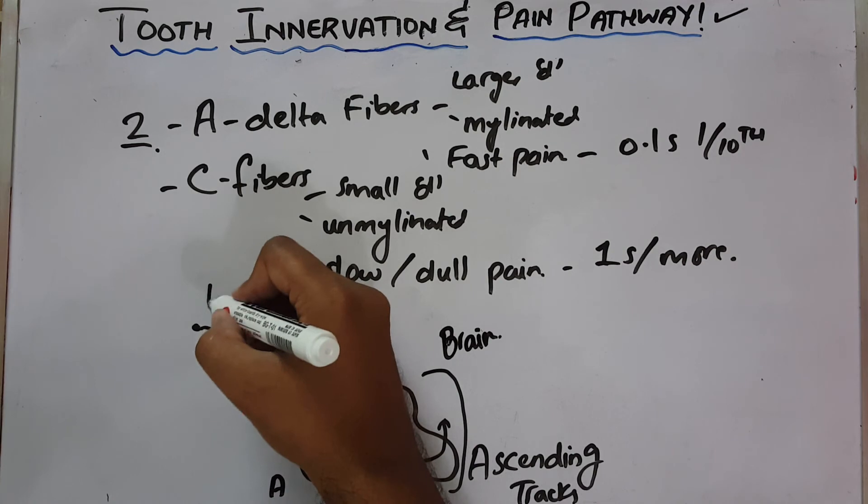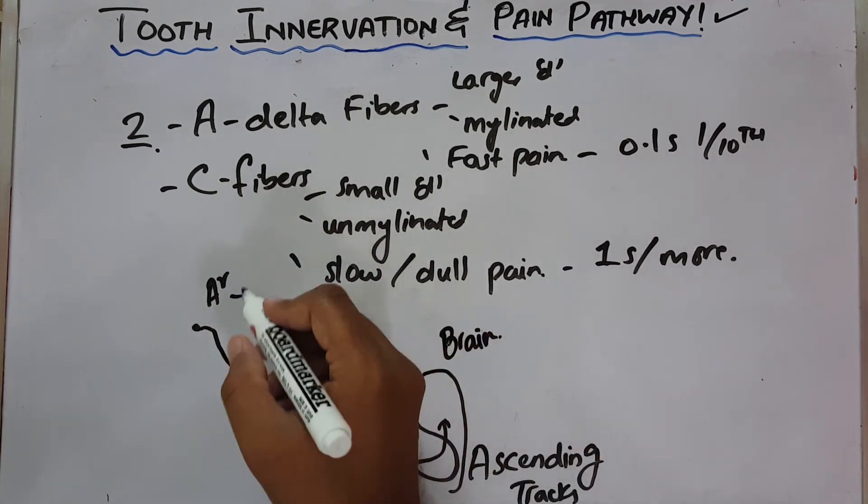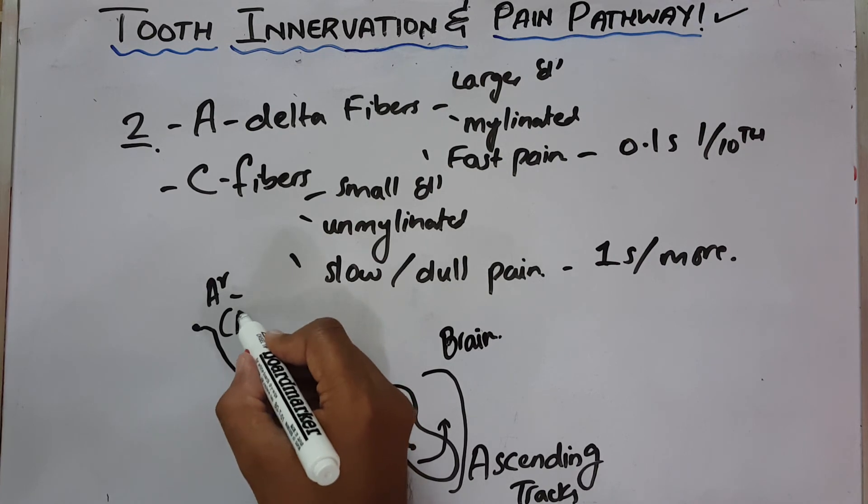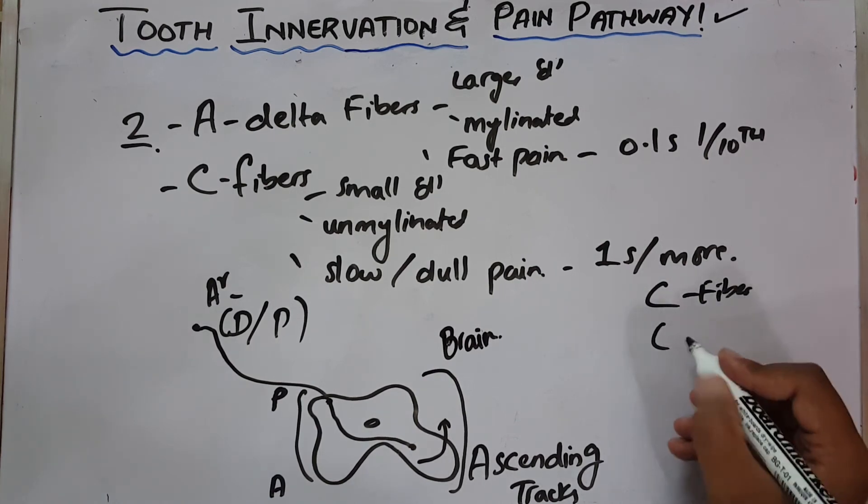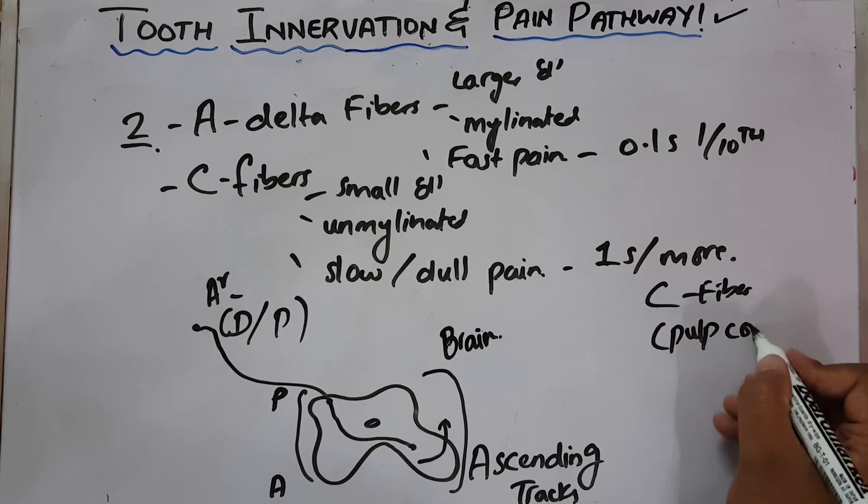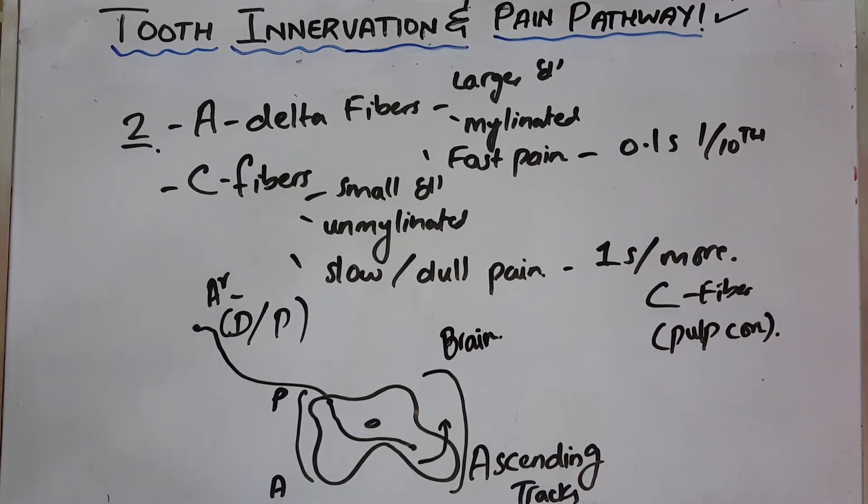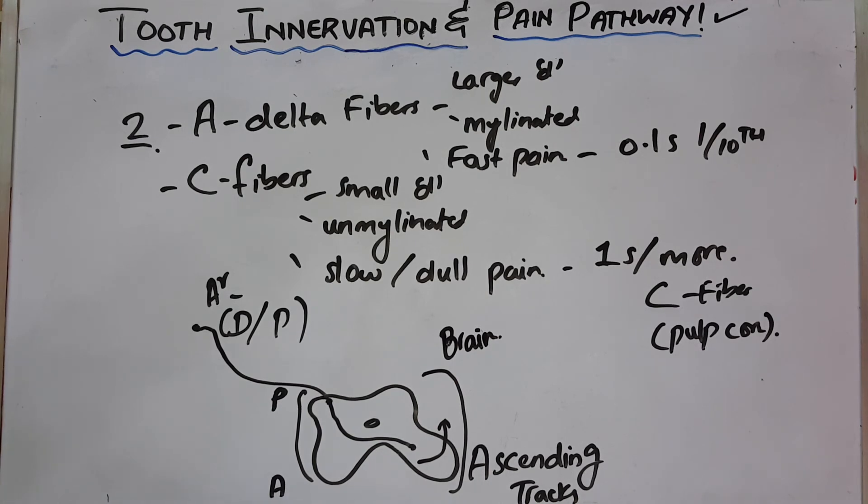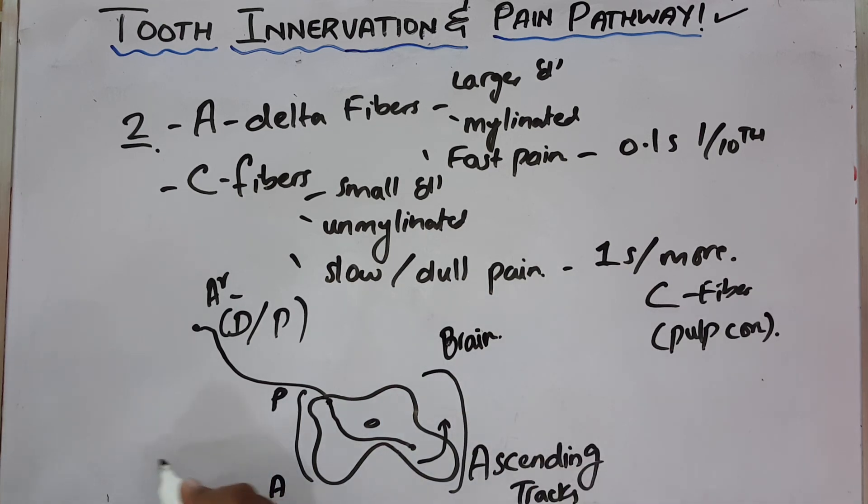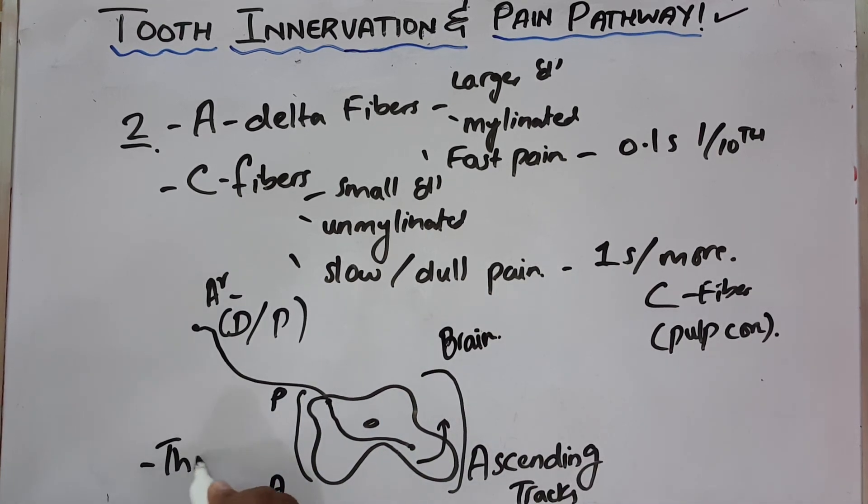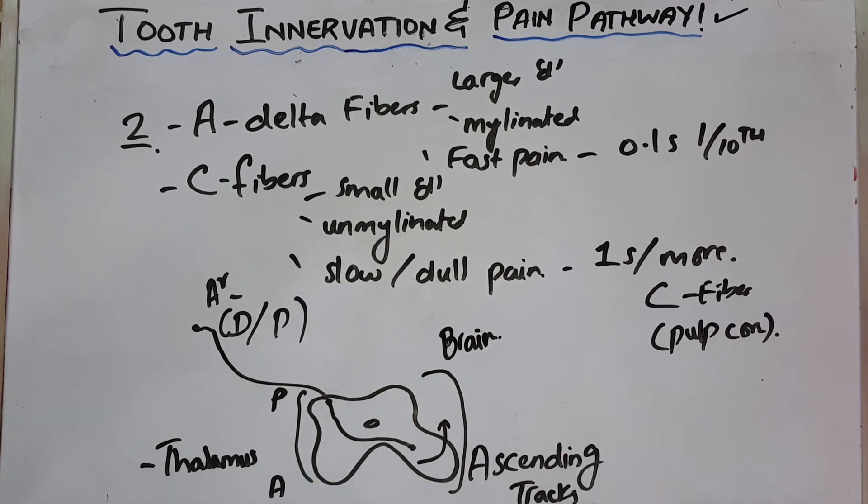An A-delta fiber, which is more commonly found in the junction of the dentin and the pulp, and the C fiber, which is abundantly found in the pulp core, both follow the same pathway. The difference is that the A-delta fiber follows a single course inside the spinal cord, moves to the opposite side, and continues as a single neuron, directly approaching the thalamus where the pain center is present.